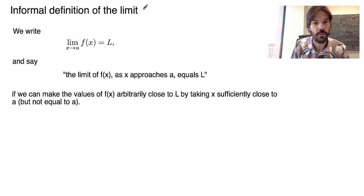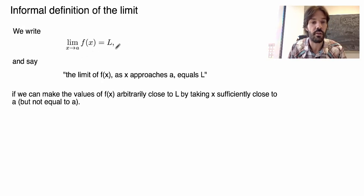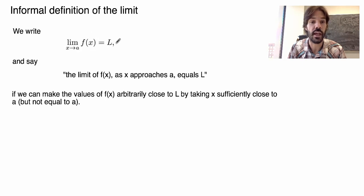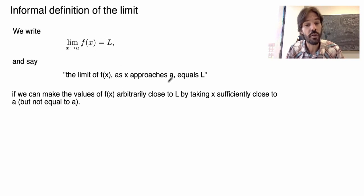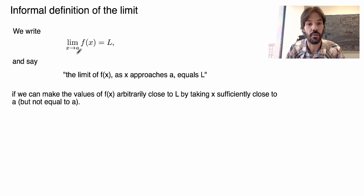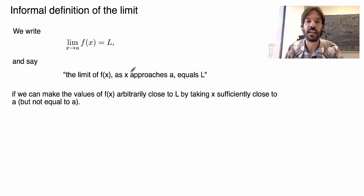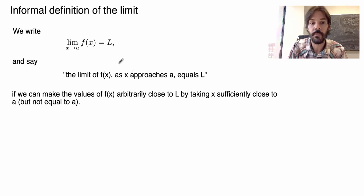Here's an informal definition of a limit. We write this fancy notation and say the limit of the function f as x approaches a is equal to the number L if we can make the values of the function f arbitrarily close to L by taking x sufficiently close to a. In plain language, that means that as x gets closer to a, then f gets closer to L.